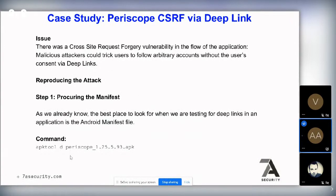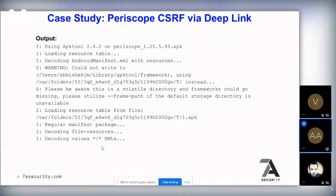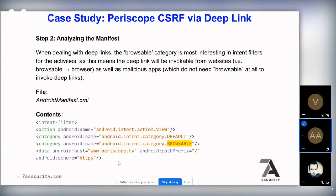The first thing to do is decompile the application with APKTool: run 'apktool d' followed by the Periscope APK. From there, open AndroidManifest.xml and look for intent filters — you'll see action, category browsable, and the data fields: Android host, Android path prefix, Android scheme. In this case we have Android scheme 'https', Android host 'www.periscope.tv', and path prefix '/'. This is a scenario where deep links don't require a custom scheme — the attack works via standard HTTPS URLs if the app has registered them.